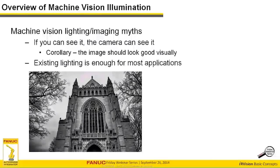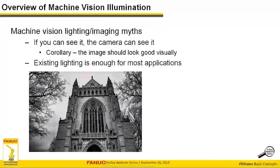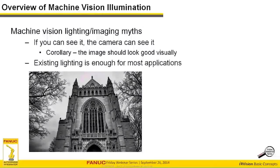Another myth: 'existing lighting is enough for most applications.' Ambient lighting — the lighting coming from plant floor fixtures and skylights — is more of a foe than a friend in machine vision. There may be cases where ambient lighting is good enough, and I want to define those specifically, but you need to understand the challenges of overcoming ambient lighting.